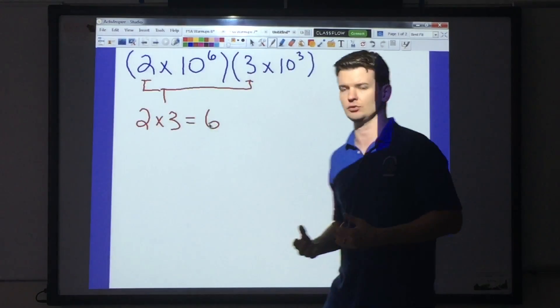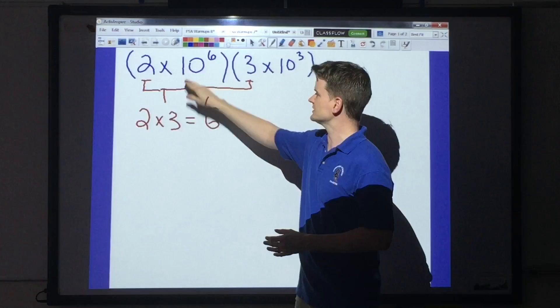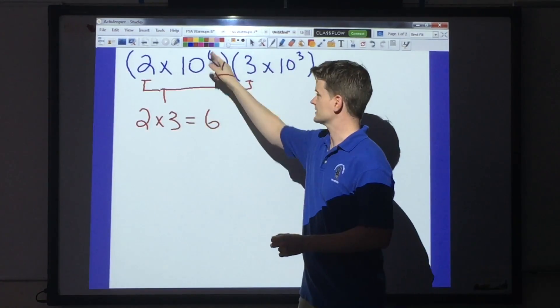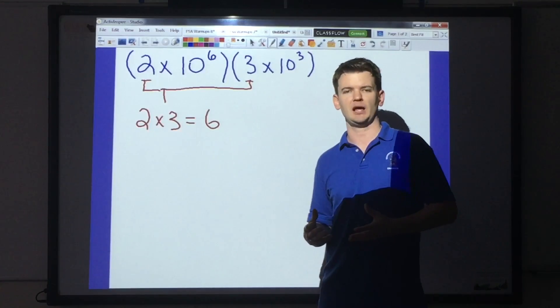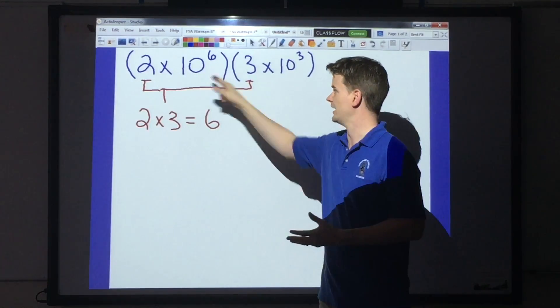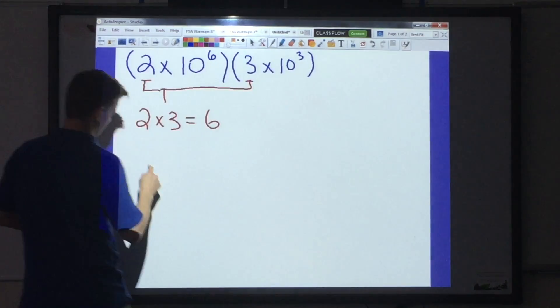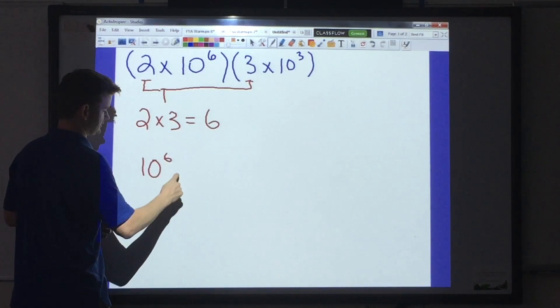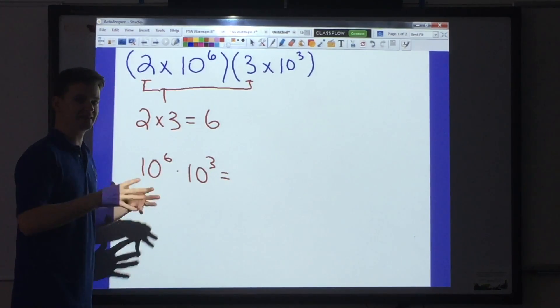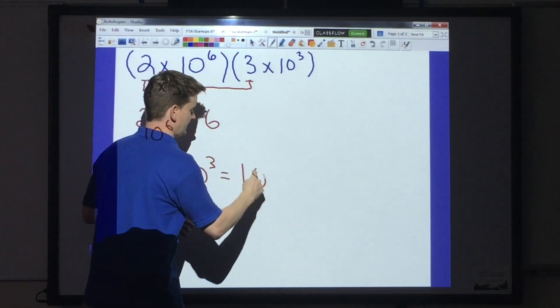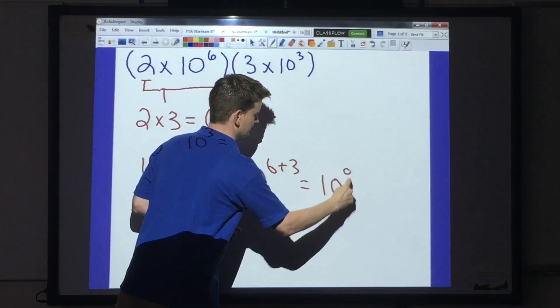Now, the next thing is to deal with our exponents. We look here, we have a base of 10, a base of 10, an exponent of 6 and an exponent of 3. When we multiply like bases, which is what 10 and 10 are, we add the exponents. So we have 10 to the 6th times 10 to the 3rd. That's going to give me, when I add the exponents together, 10, 6 plus 3, which gives me 10 to the 9th.